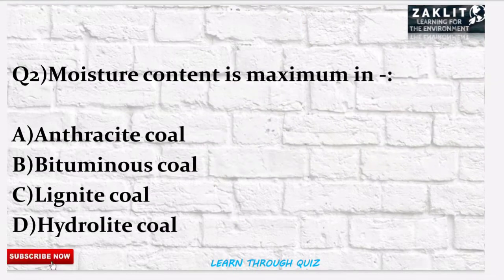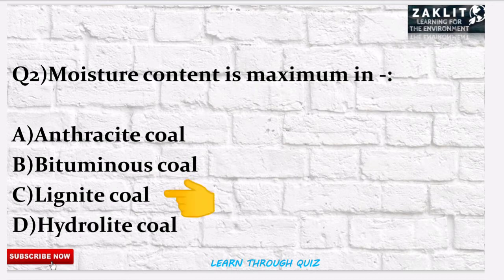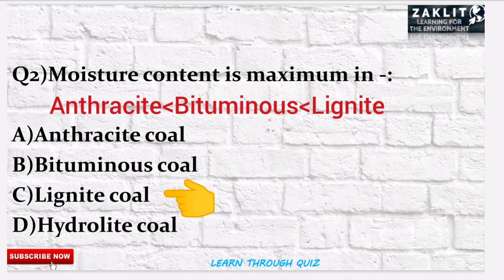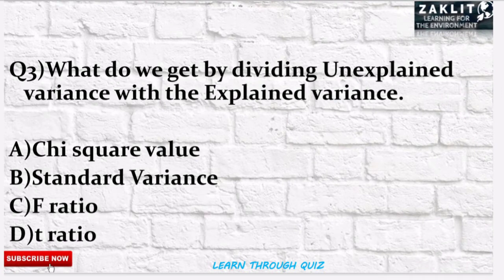The second question was: the moisture content is maximum in which kind of coal? The correct option is C — lignite coal. Anthracite has the least moisture content, followed by bituminous coal and lignite coal. You should know that the more the moisture content, the less is the quality of coal.